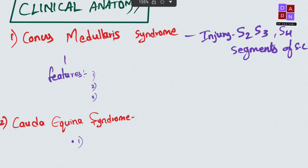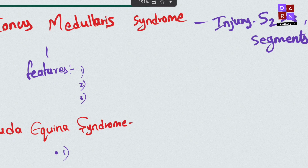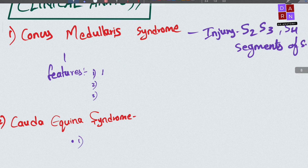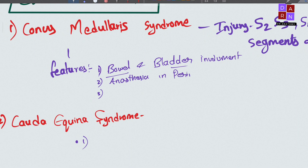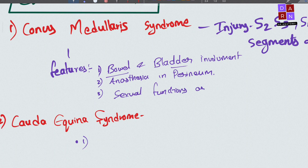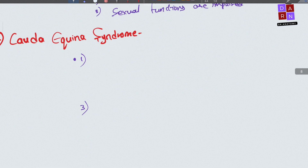For clinical anatomy: conus medullaris syndrome results from injury to the conus medullaris segment. Its effects include bowel and bladder involvement, anesthesia in the perineum, and impaired sexual functions.